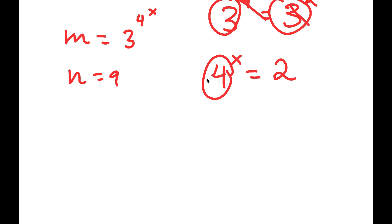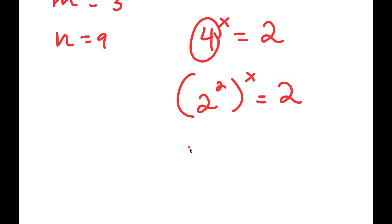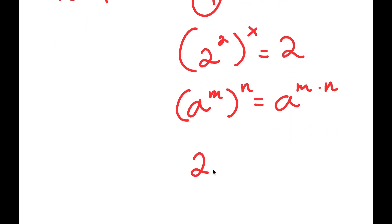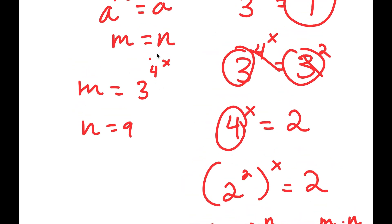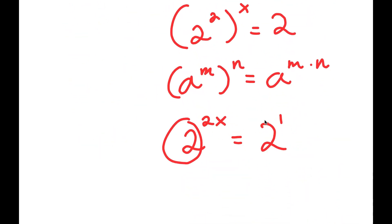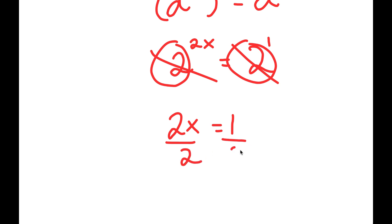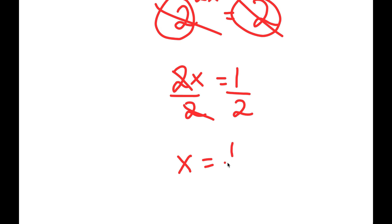Now, 4 is the same thing as 2 squared. So I get 2 squared to the power of x is equal to 2. If I have something in the form a to the power of m to the power of n, this is equal to a to the power of m times n. So 2 to the power of 2 to the power of x equals 2 to the power of 2x. This is equal to 2, which is 2 to the power of 1. Because these two bases are the same, I get 2x is equal to 1. Dividing both sides by 2, I get x is equal to 1 half.